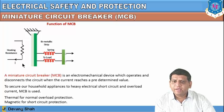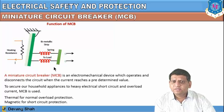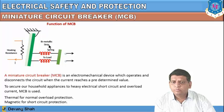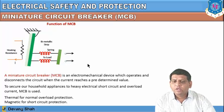During overload or high heating condition, the spring elongates and the bi-metal strip is tripped. Once tripped, the contact opens and there is no connection between source and load. By this way your appliances can be saved using this mechanism of the MCB.